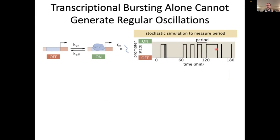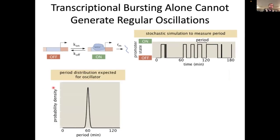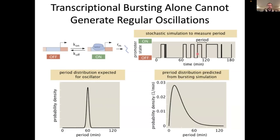If this could give me oscillations, if I plotted the distribution of periods, I would expect that distribution to be peaked around a given defined period. But when you measure your simulation, not surprisingly, what you see is a very broad distribution of periods just from bursting. So clearly, transcriptional bursting by itself cannot give rise to a defined period, cannot give rise to robust oscillations.